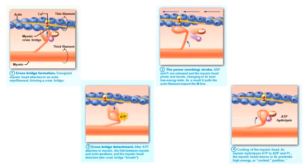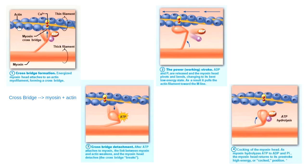We have two proteins involved in making contraction happen: myosin, the big red protein, which is the thick filament, and actin, the blue protein, which is the thin filament. When you do muscle contraction, we take a muscle cell that's this long and squeeze it shorter. The way we make it shorter is my actin protein actually slides past my myosin protein.